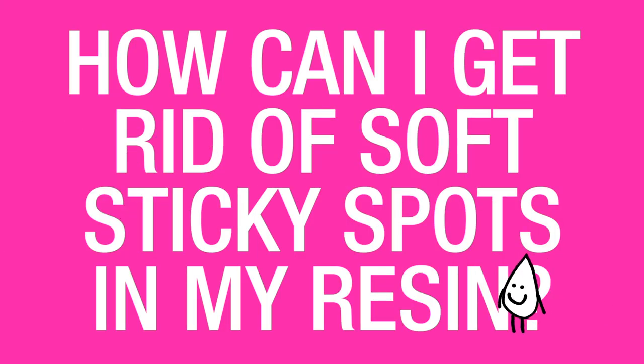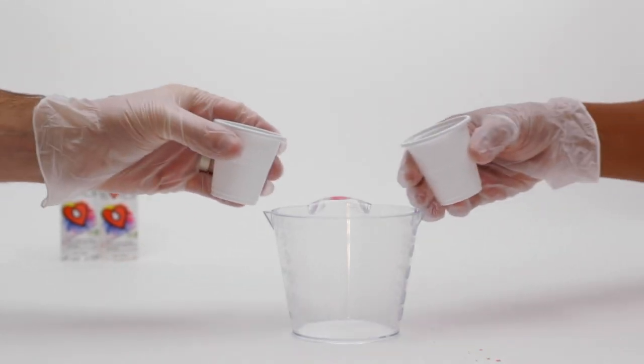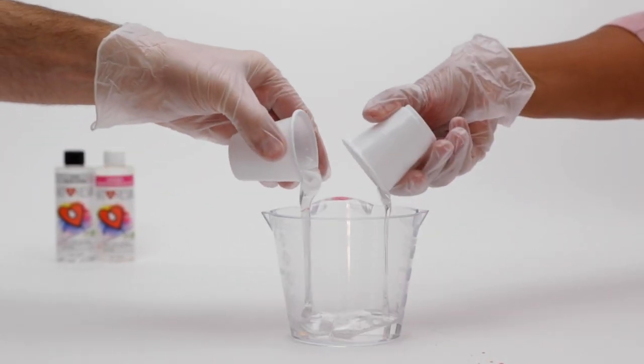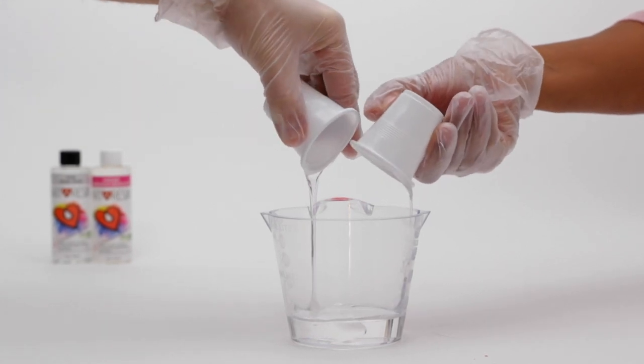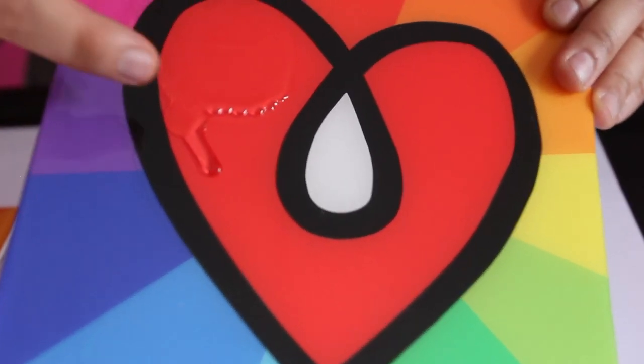How can I get rid of soft sticky spots in my resin? If after a day of curing you've noticed some soft sticky spots in your resin, it means either the delicate one-to-one balance of the resin and hardener was off just a little bit, or the material just wasn't mixed thoroughly.